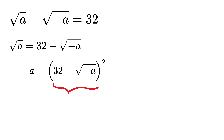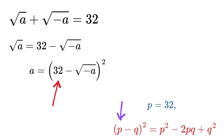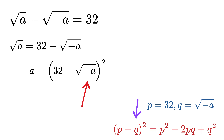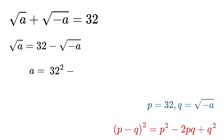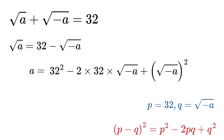On the right-hand side, we apply the identity (p minus q)² equals p² minus 2pq plus q². In our case, p is 32 and q is the square root of minus a. So the right-hand side becomes 32² minus 2 times 32 times the square root of minus a, plus the square root of minus a squared.